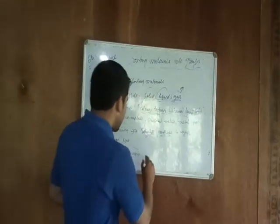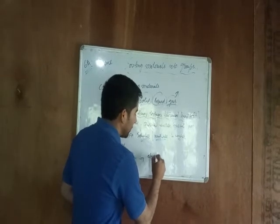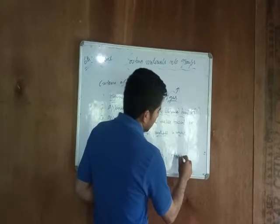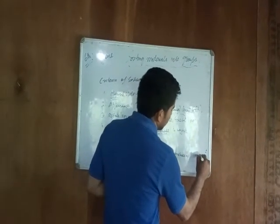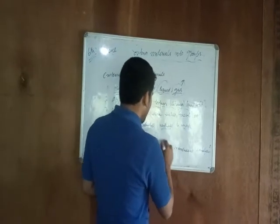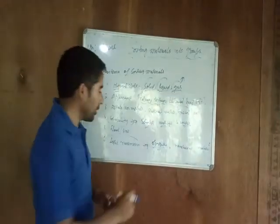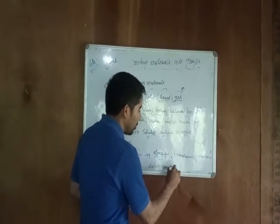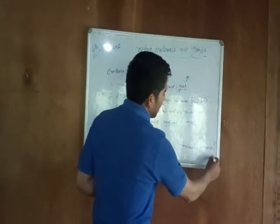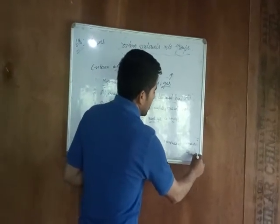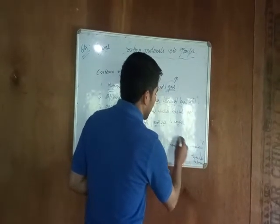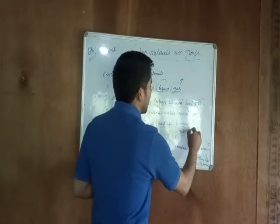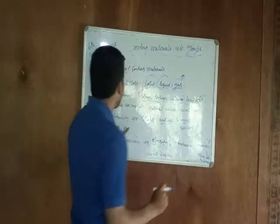Number five is light transmission. For light transmission we have three things: opaque, translucent, and transparent. Opaque objects do not allow light to pass through them. Transparent materials allow light to pass through them fully. Translucent objects allow only partial light to pass through them.